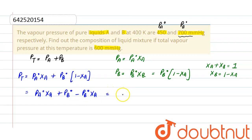And we can also write it as Pb node plus Pa node minus Pb node into Xa. Now, total pressure is given, that is 600, is equal to Pb node is 700 plus Pa node is 450 minus Pb node is 700 into Xa.